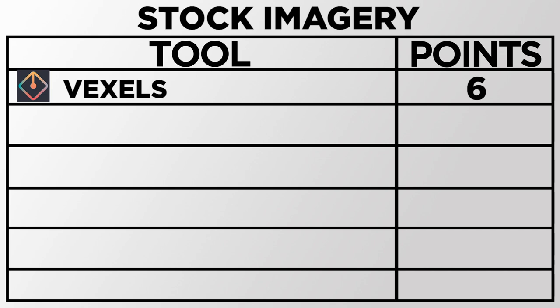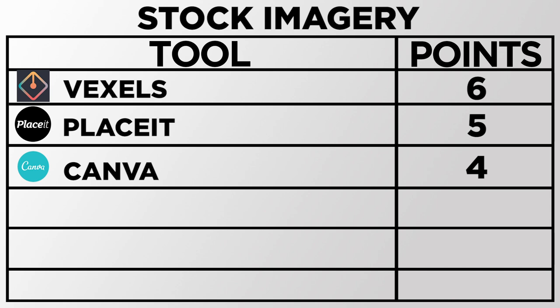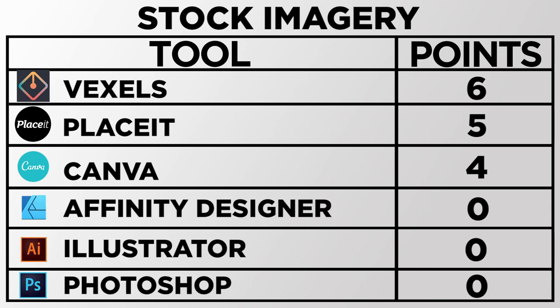Second place goes to Placeit. Although they don't have the largest stock library, you know exactly what you can and can't use — any image in their library is usable with a subscription. Canva takes third place with four points because, despite having a lot of stock, the commercial rights information is very difficult to understand. Illustrator, Photoshop, and Affinity Designer all get zero points because they don't offer any stock imagery.